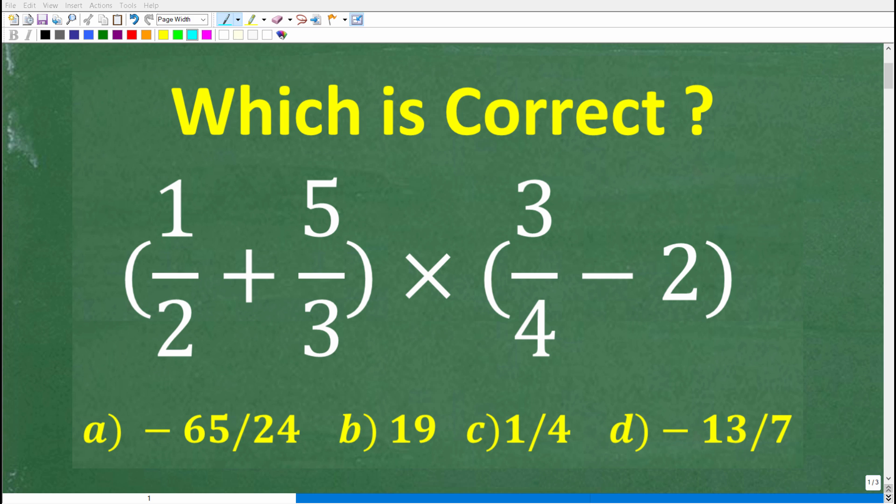All right, so let's put your basic math skills to the test and see if you can solve this problem without using a calculator. The actual problem is parentheses 1 over 2 or 1 half plus 5 over 3 parentheses times parentheses 3 over 4 minus 2 parentheses.